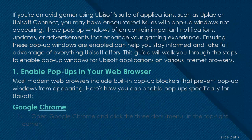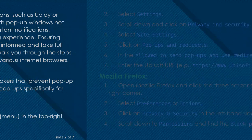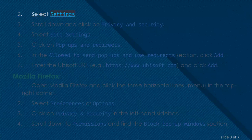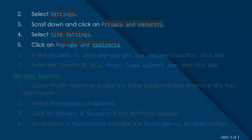Google Chrome: Open Google Chrome and click the three dots menu in the top right corner. Select Settings. Scroll down and click on Privacy and Security. Select Site Settings. Click on Pop-Ups and Redirects.